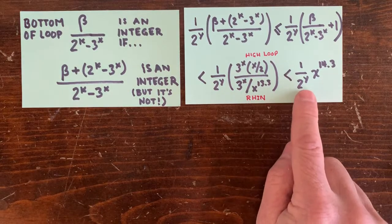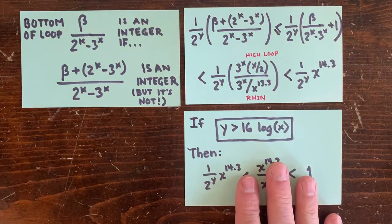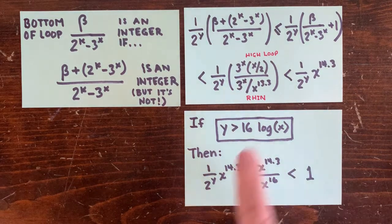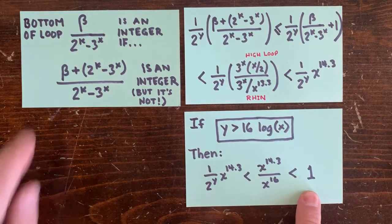So if our loop has a y greater than 16 log x, then we'll be below 1. And this over here can't be an integer loop.